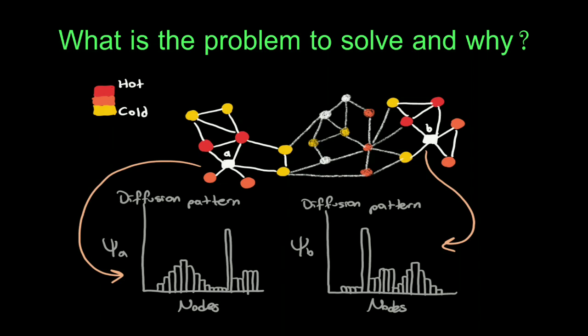Thus, the algorithm concludes that these two nodes have the same role in the graph. It calculated the diffusion pattern probability distribution for A and B and compared them.